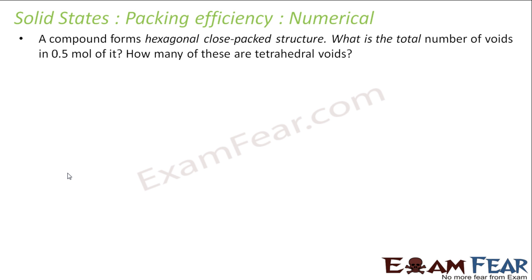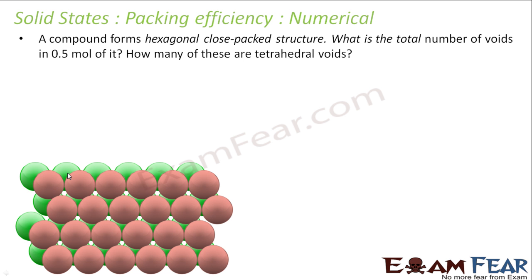A compound forms hexagonal close-packed structure. This is my hexagonal close-packed structure. What is the total number of voids in 0.5 mole of it? And how many of these are tetrahedral voids? We know that N molecules will get N octahedral voids and 2N tetrahedral voids. This is something we know.